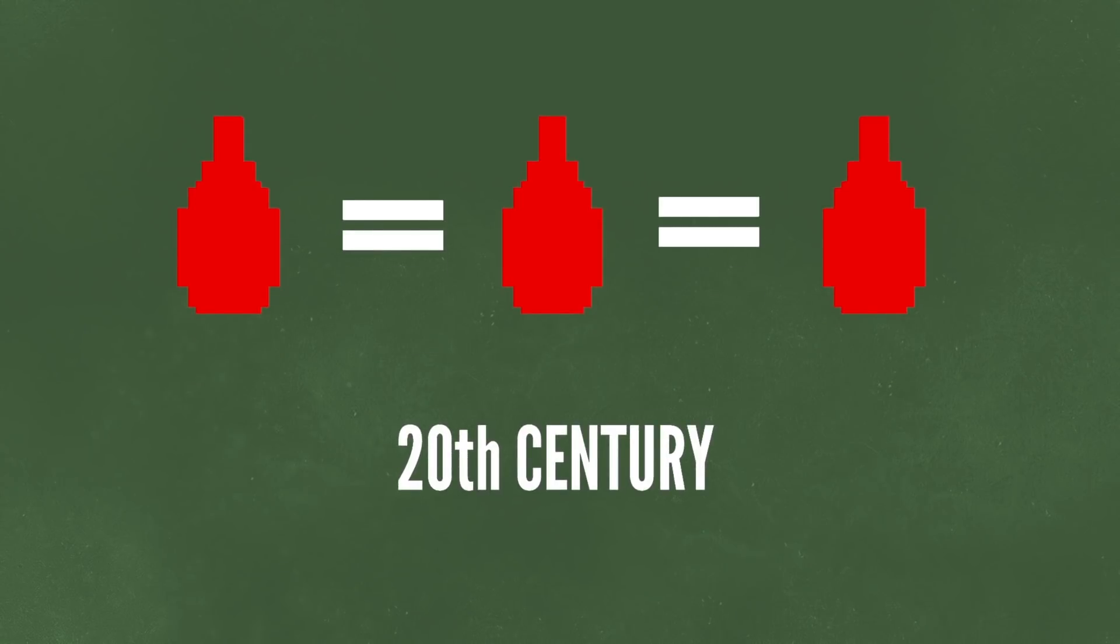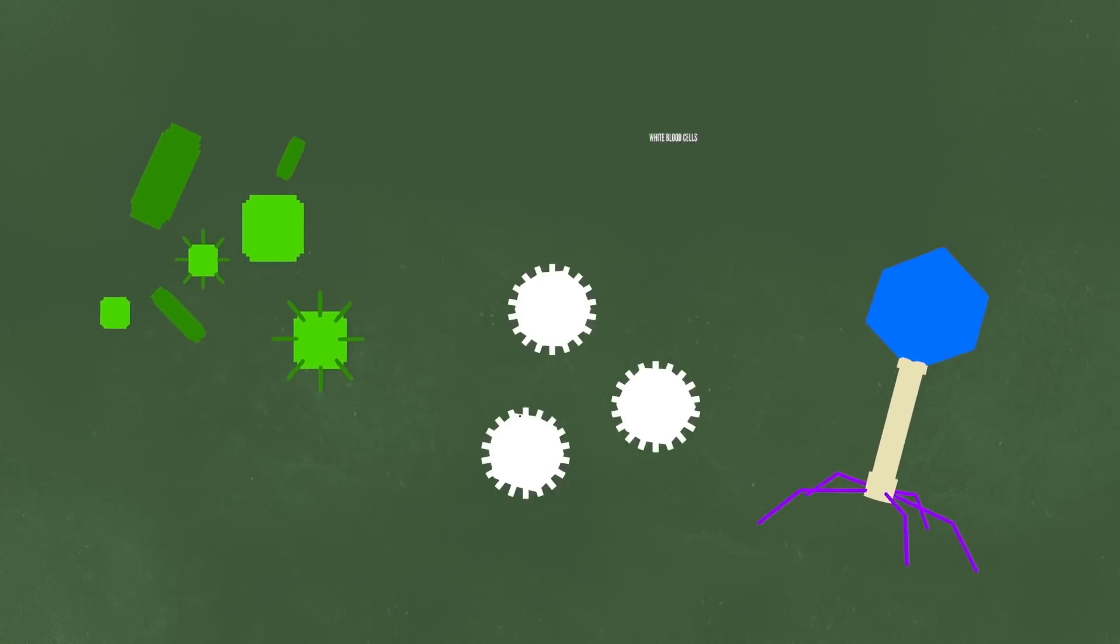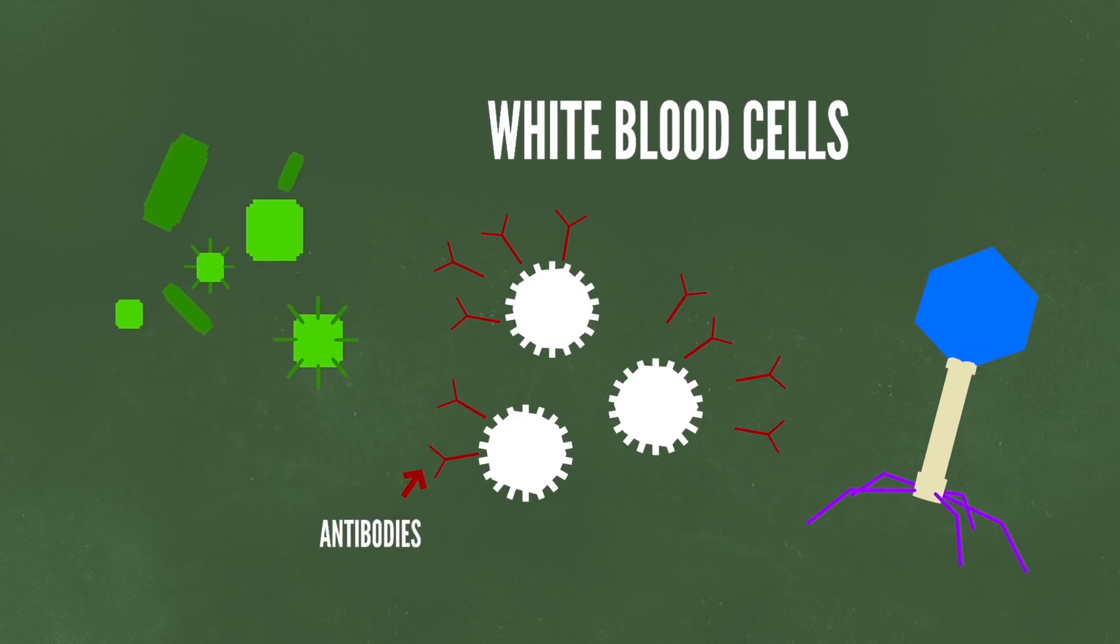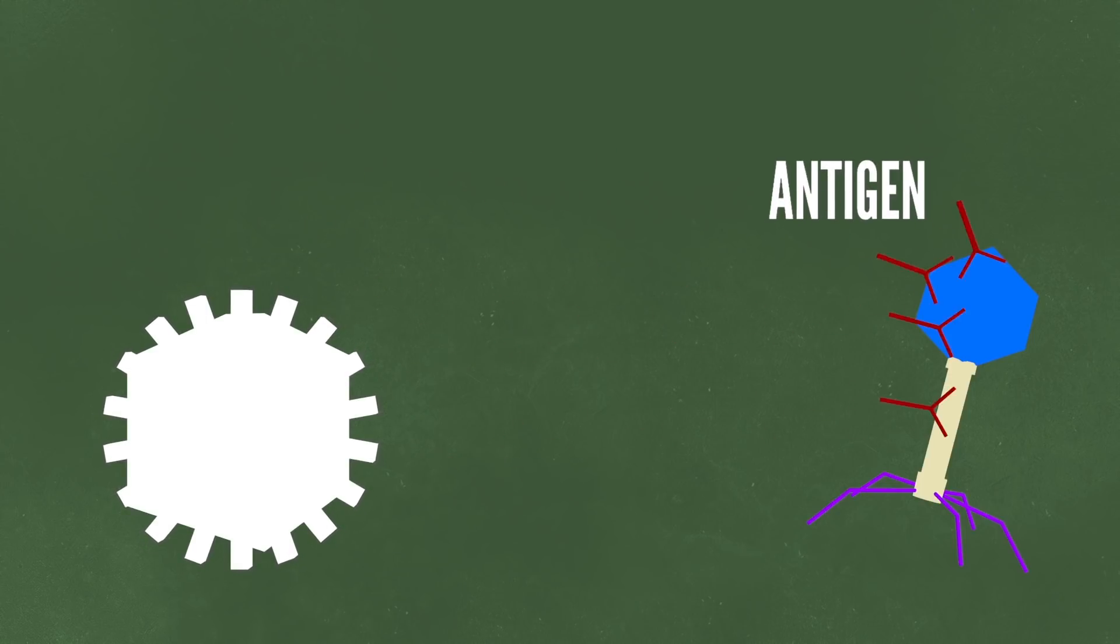For most of human history, we thought that all blood was the same. In fact, it wasn't until the 20th century that we discovered that we were wrong. When foreign objects like bacteria or viruses get into our body, your white blood cells produce antibodies, which are like your own personal army. These antibodies recognize the foreign object, which we call an antigen, and attack it.